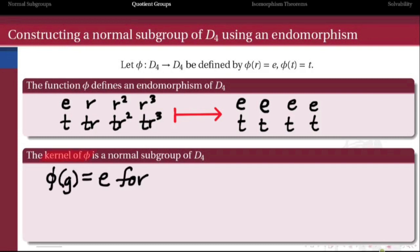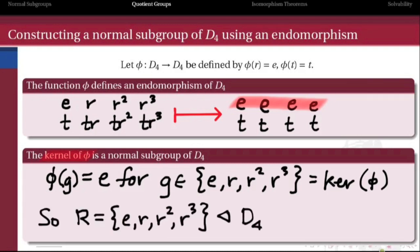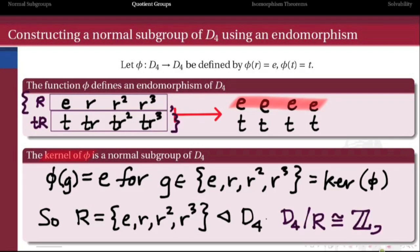Now what's the kernel of this homomorphism? Well, the kernel is everything that's getting sent to the identity, and so it's all the elements E, R, R², and R³. All the rotations are the kernel of this homomorphism, and so that implies that the subset of rotations is a normal subgroup of D₄. Now what's the quotient? The quotient is going to be the group that consists of just these two cosets, and because there's only two of them, we know for sure that that quotient is isomorphic to Z mod 2.